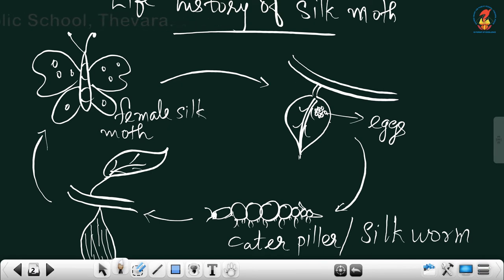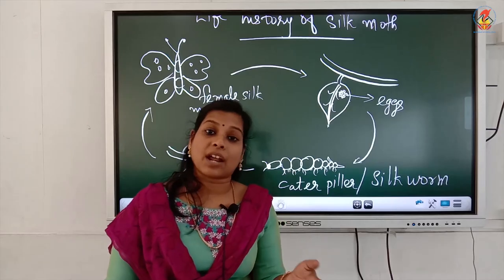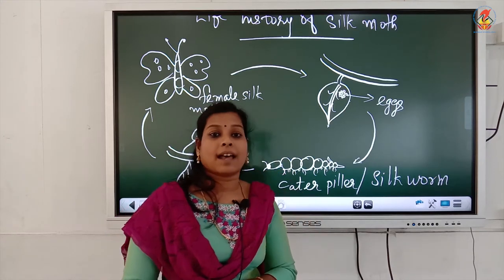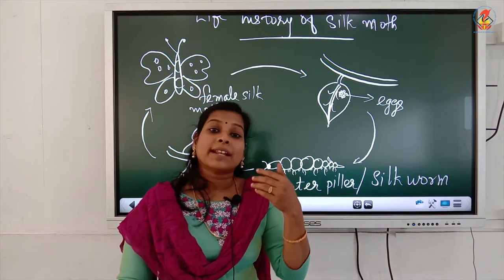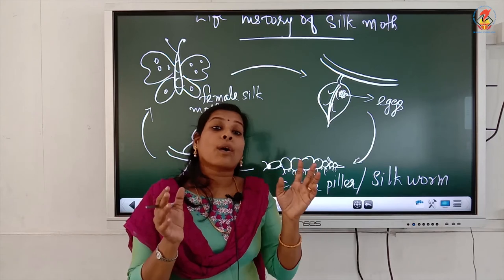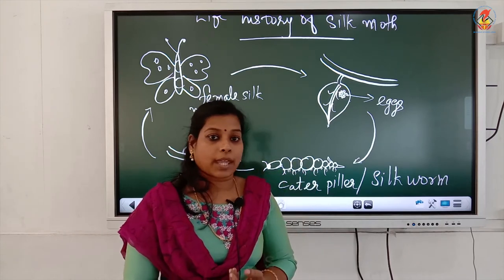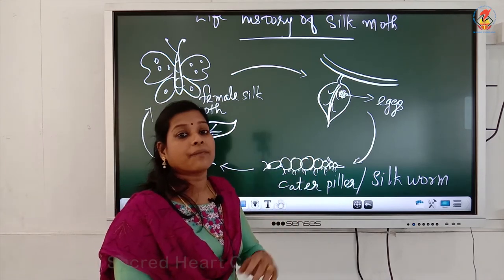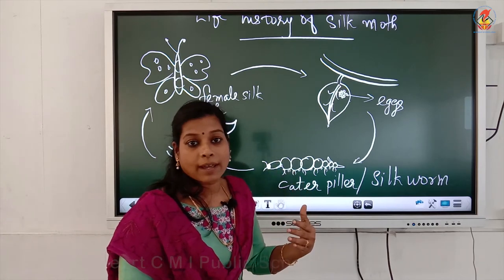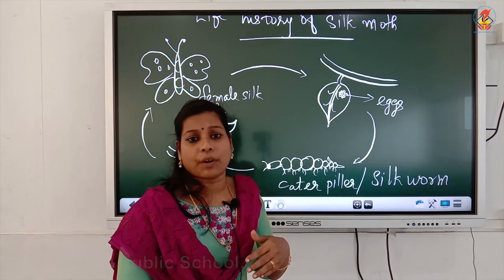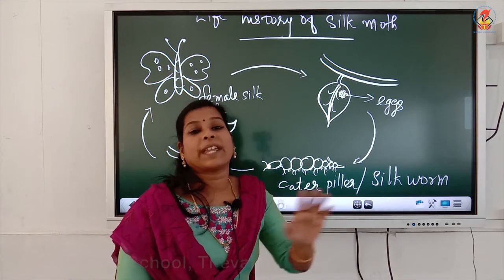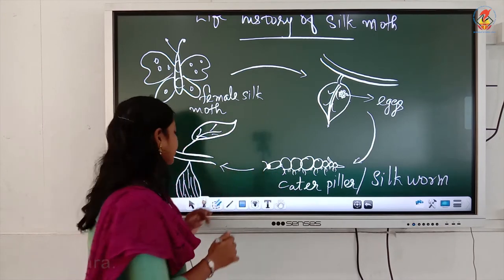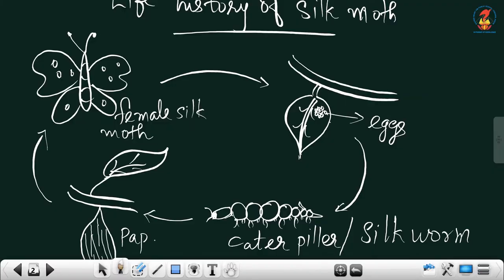The silk worm eats mulberry leaves day and night continuously for few days — it will only eat, no other work. They grow to an enormous, big size. Once they finish feeding, that means after few days of continuously taking food, they stop eating. Once the eating is stopped, they go into the next stage — stage 3 — that is pupa.